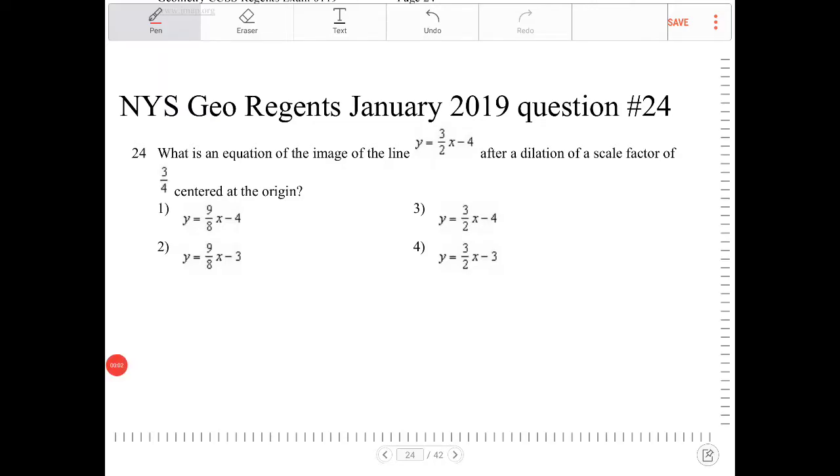What is an equation of the image of the line y equals 3 halves x minus 4 after a dilation of a scale factor of 3 fourths centered at the origin?